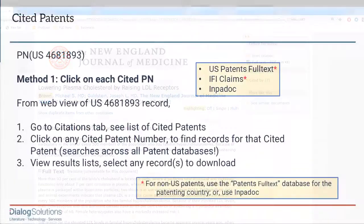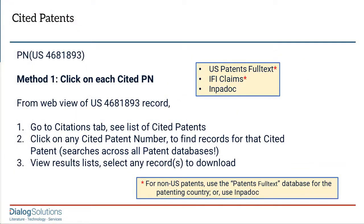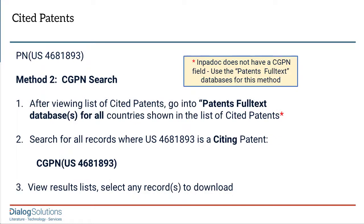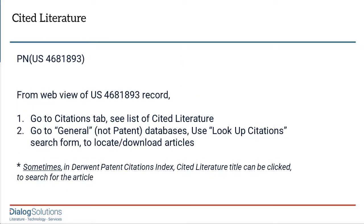Before we wrap up, let's review database choices. For demonstration, I was using a US patent, so I began in US Patents Full Text, or I could have used IFI Claims. If the patent was from some other country, I would have used the full text patent database for the country or authority that issued the patent. Or I could have used Impadoc, which covers over 100 countries, to search for the patent, find the cited patents list, and click on each one. But it's important to note that if I want to create a set of all the cited patents by using a citing patent, or CGPN search, then that is something you cannot do in Impadoc, because Impadoc doesn't have a CGPN field. So for the CGPN search, to create a set of all the cited patents, you want to go into the full text databases for all of the cited patents that you're looking for.